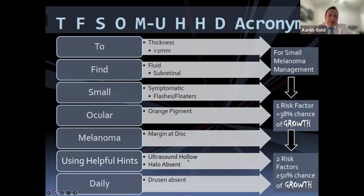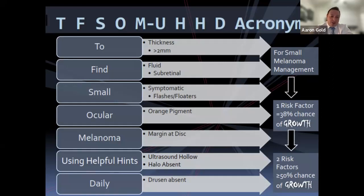Regarding hollow ultrasound — that's really low internal acoustic reflectivity as we discussed. For halo absent: some lesions have halos around them that tend to be more stable with a lower incidence of melanoma, possibly from a prior inflammatory condition. No halo is more suspicious. Similarly, drusen absent: drusen suggests chronicity of the lesion. If you don't see drusen, is the lesion new? A red herring: if drusen are only on one side of the tumor, you may be dealing with a transformed nevus. Most melanomas are de novo, but a stable nevus can transform to melanoma over many years.